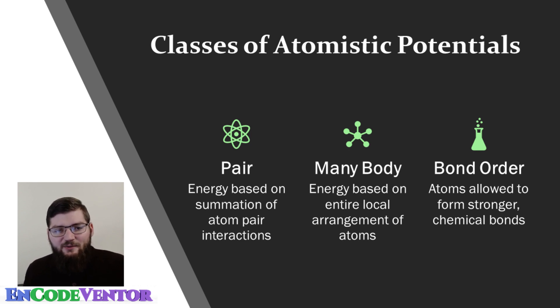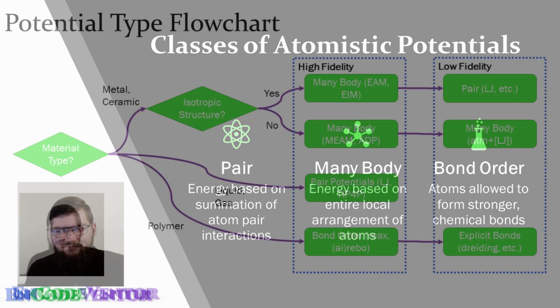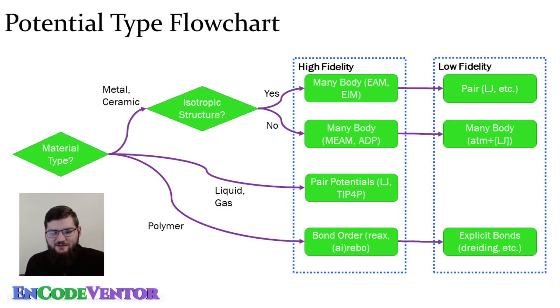Finally, we're going to look at bond order potentials, which are typically used for polymeric systems, something with chains and strong chemical bonds. The way we're going to look at this first is through this flowchart. Essentially, this gives us a way of starting and where to look for the potentials that we want to model our systems.